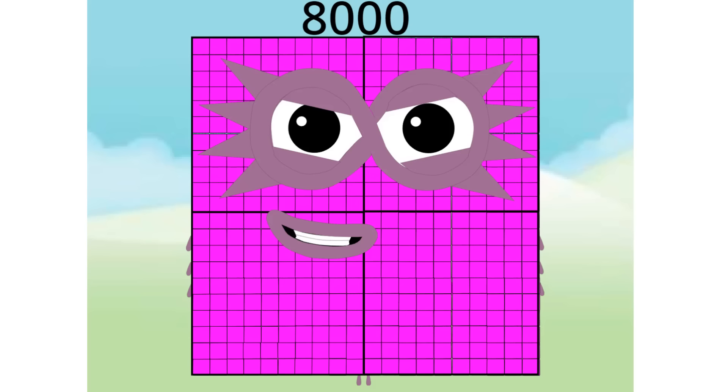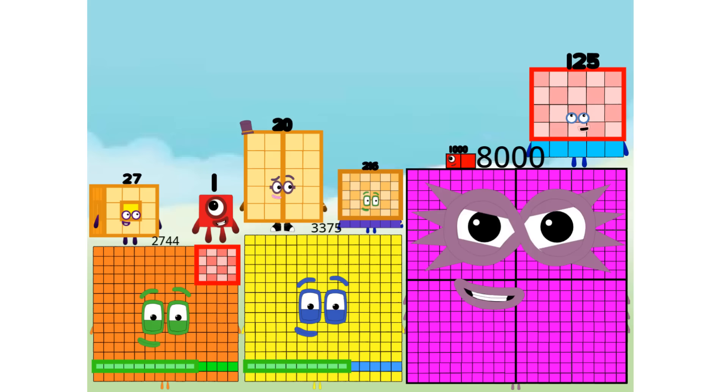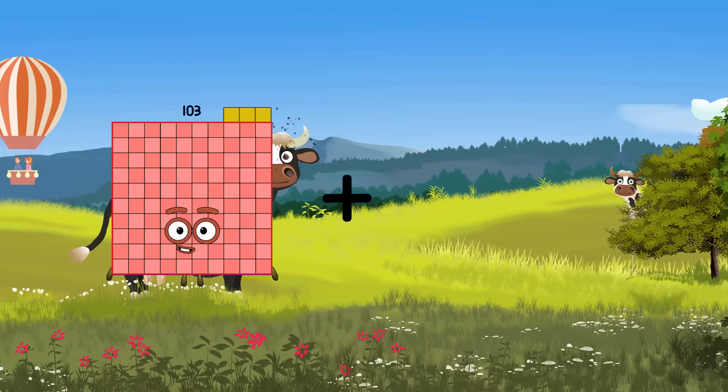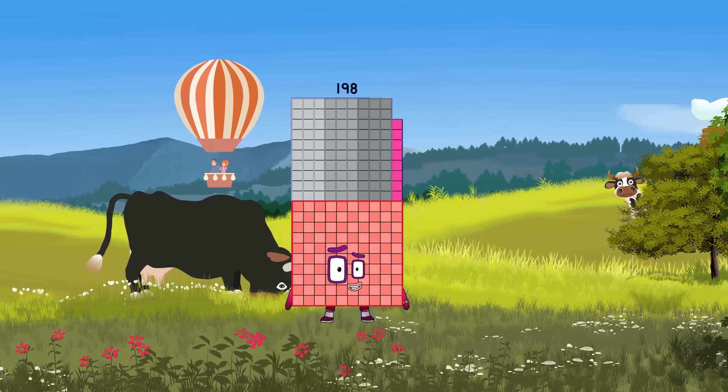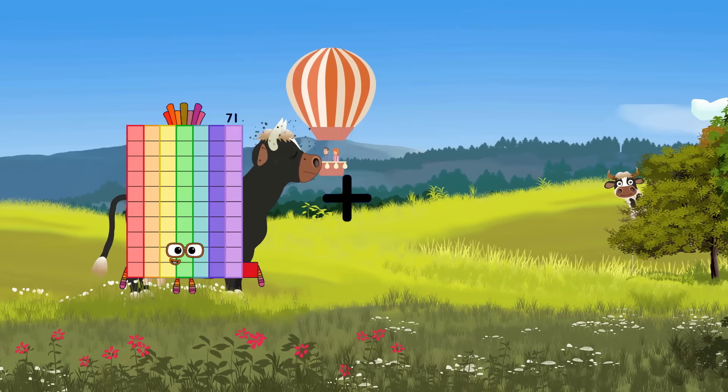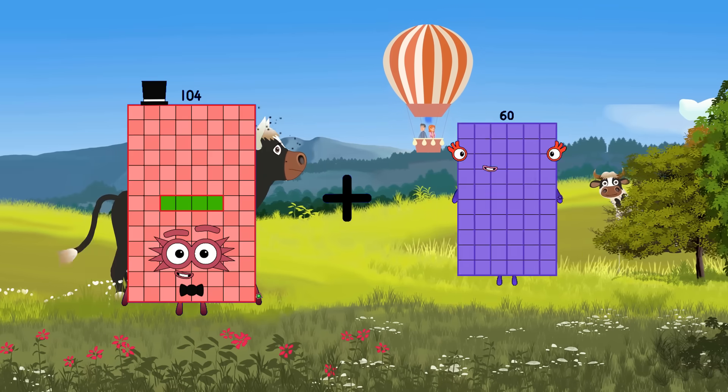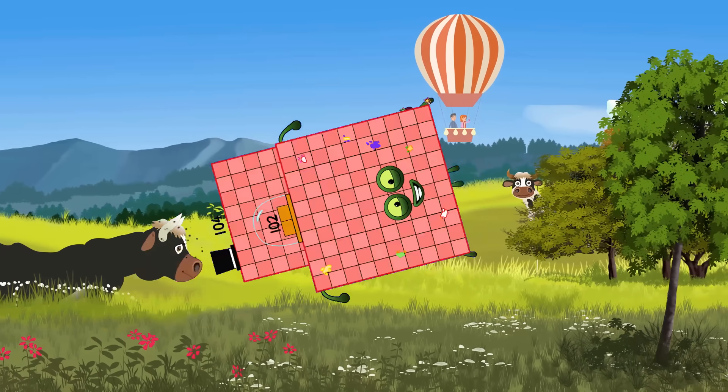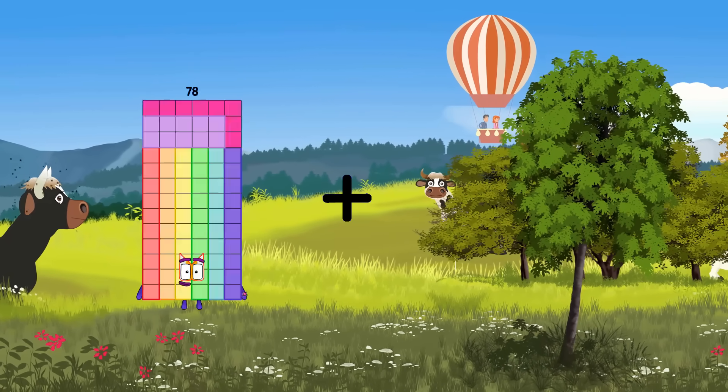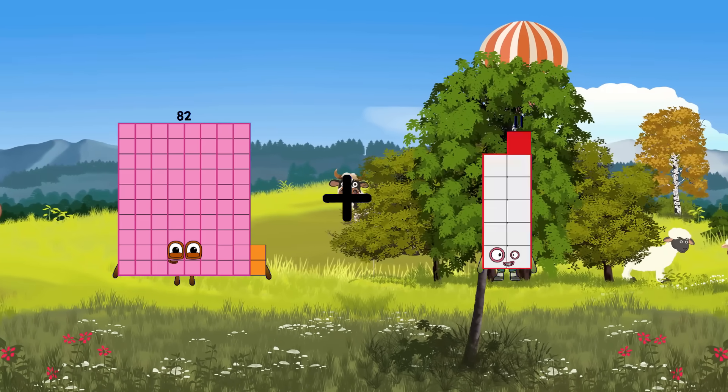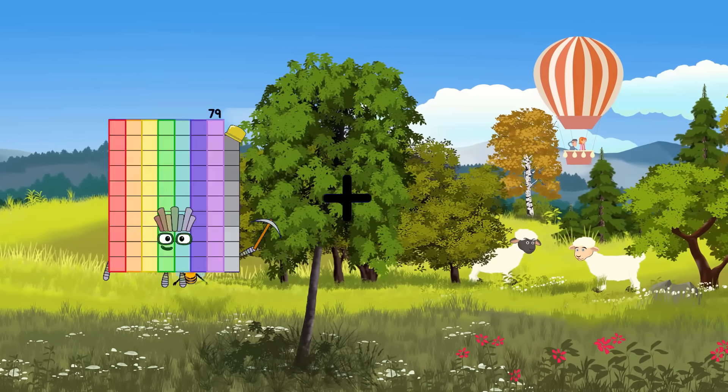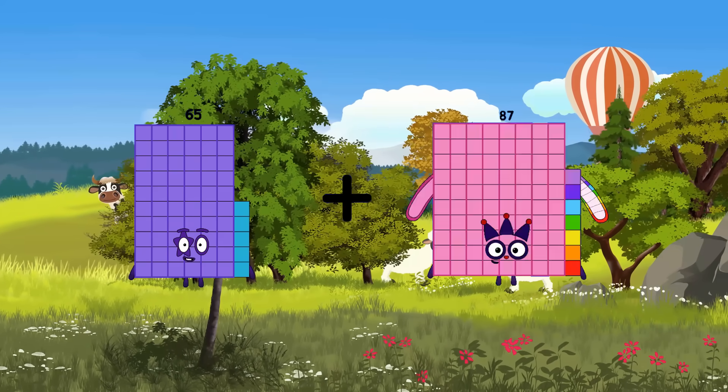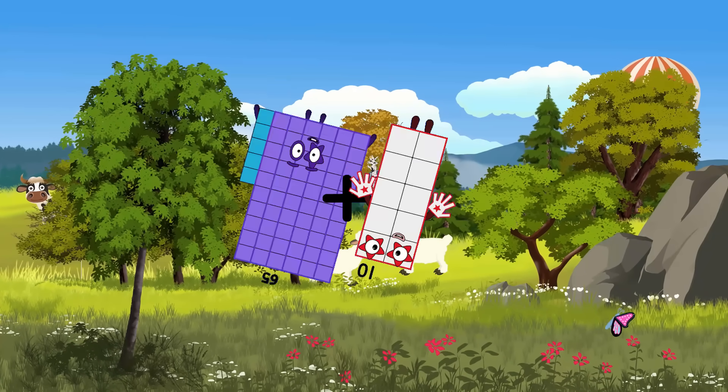82 equals 206. 82 plus 13 equals 95. 65 plus 15 equals 75.